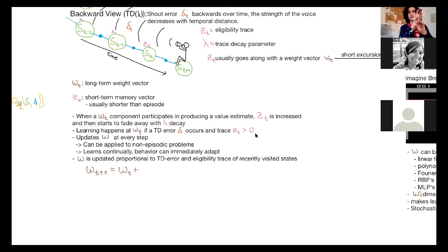So each w element is assigned an eligibility trace parameter, and when this element in the weight vector participates in producing a value estimate, the eligibility trace that goes with it increases. And then maybe in the next step, it doesn't participate anymore. So the eligibility trace decreases and decreases and decreases over time until it is active again.